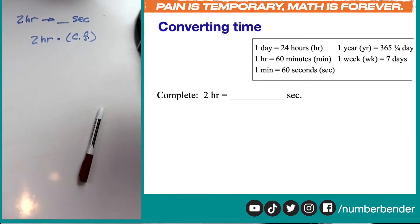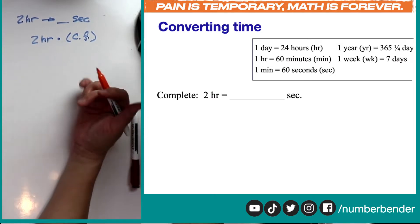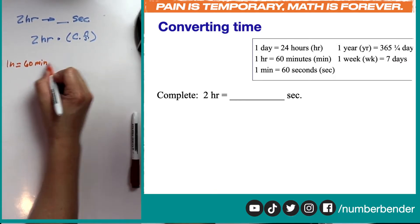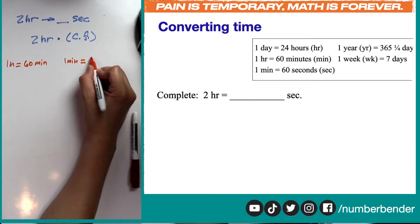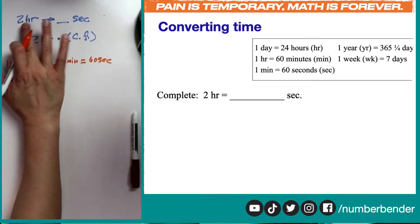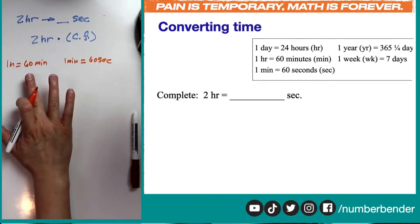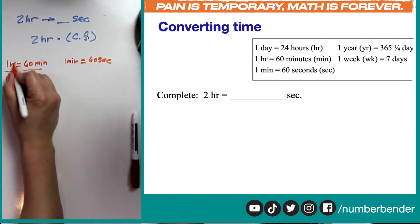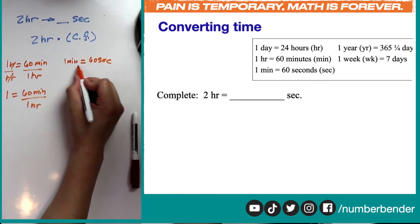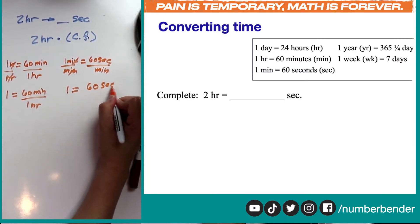There is no direct conversion from hours to seconds, but we have: one hour equals 60 minutes, and one minute equals 60 seconds. So we're making a connection from hours to minutes, then minutes to seconds, to convert hours into seconds. Our first conversion factor is 60 minutes over one hour, and our second is 60 seconds over one minute.